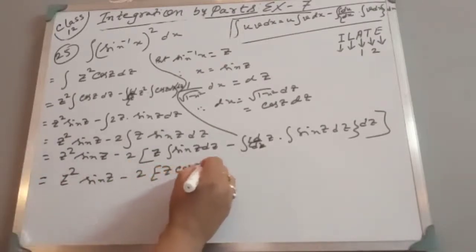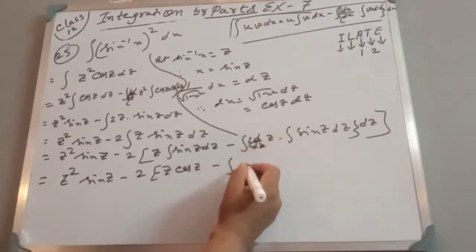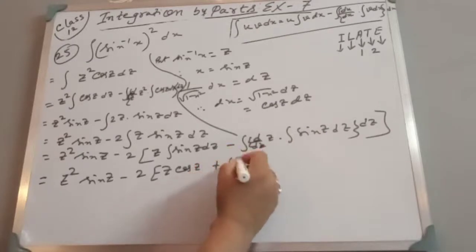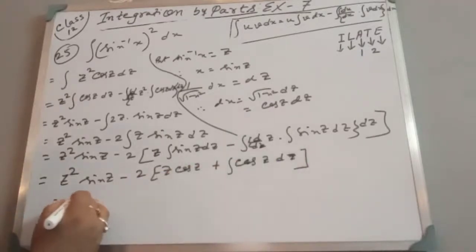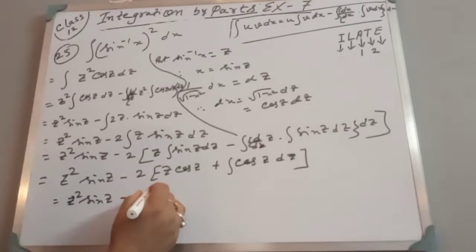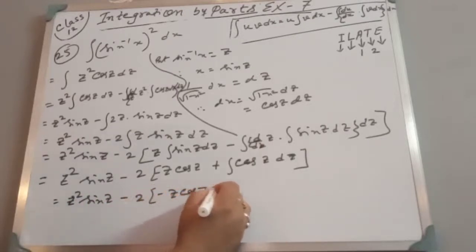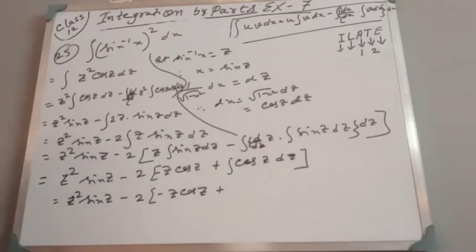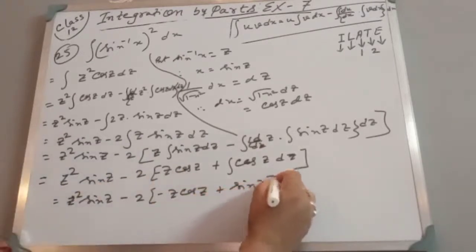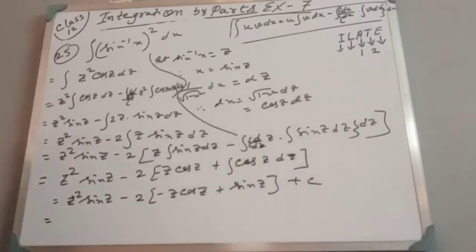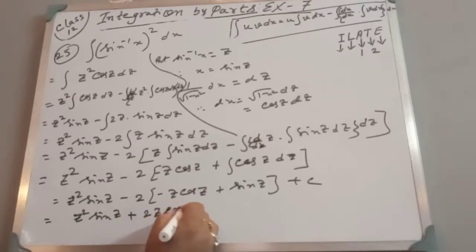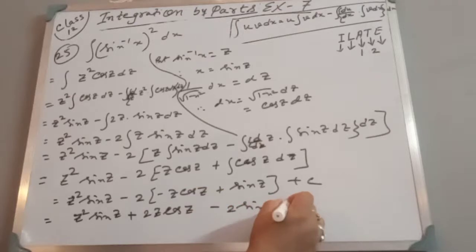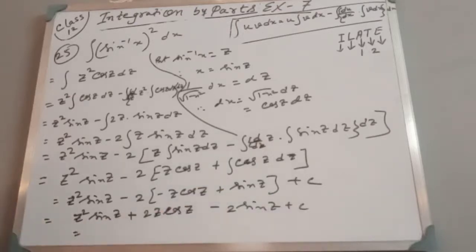We get: −z cos z − ∫(−cos z) dz = −z cos z + ∫cos z dz = −z cos z + sin z. So the full expression becomes: z² sin z − 2(−z cos z + sin z) + C.